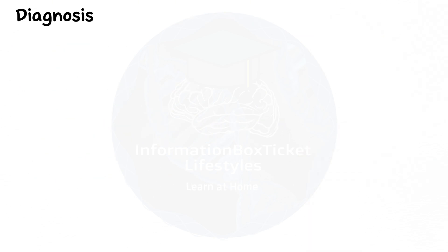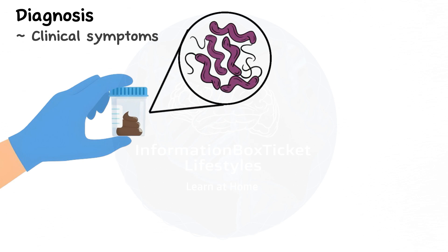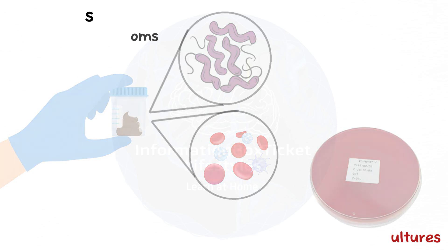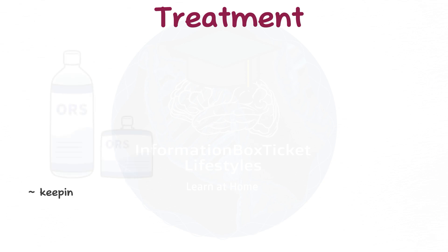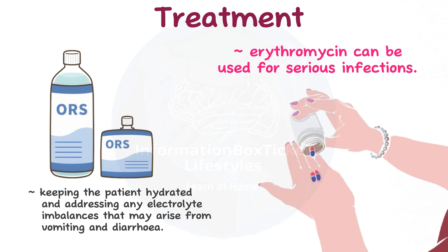The diagnosis of a Campylobacter jejuni infection is made using the patient's clinical symptoms, a stool sample that is examined directly and reveals gram-negative, comma-shaped bacteria along with white and red blood cells, or by isolating the bacteria on cultures. Since the infection normally goes away on its own, the mainstay of treatment is keeping the patient hydrated and addressing any electrolyte imbalances that may arise from vomiting and diarrhea. Antibiotics like erythromycin can be used for serious infections.